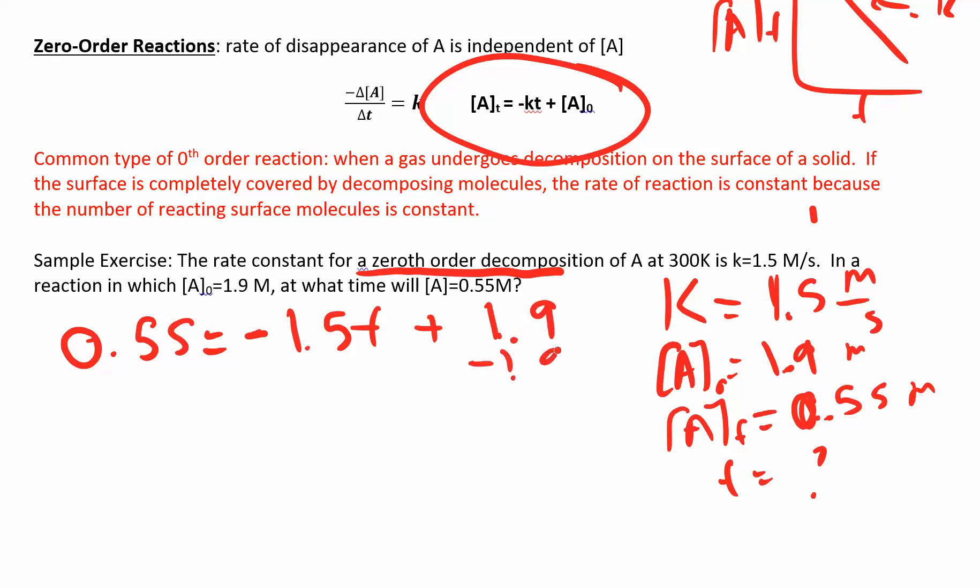So this is negative 1.35. And now I'll divide it by negative 1.5 to solve for T. That's our T. That's what we're looking for. And so I get a time of 0.90 seconds.